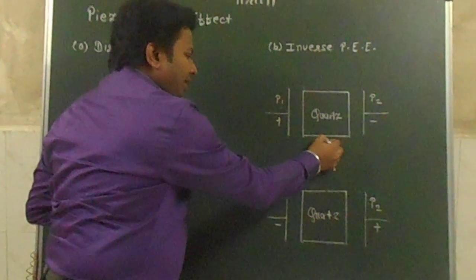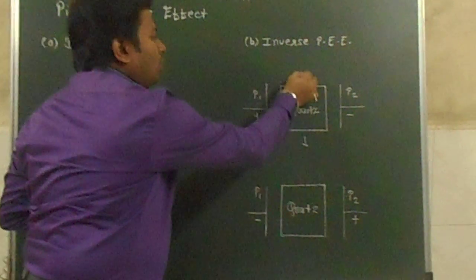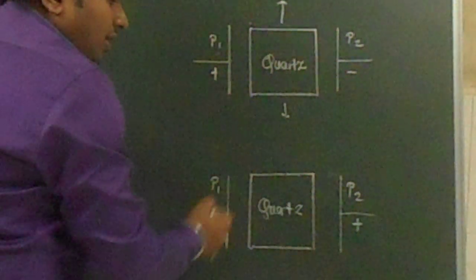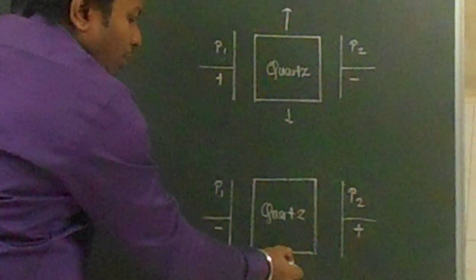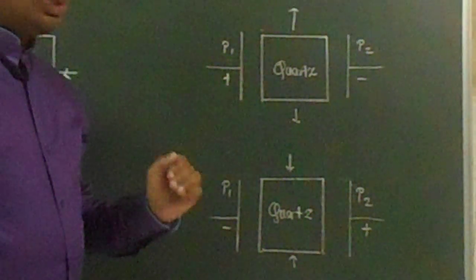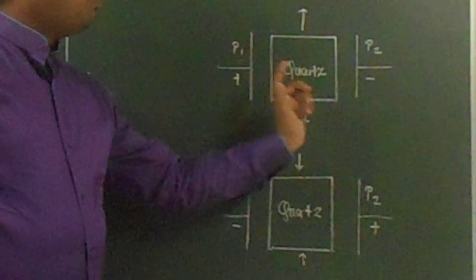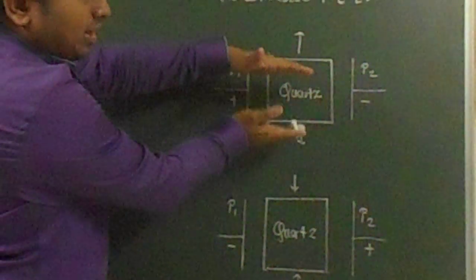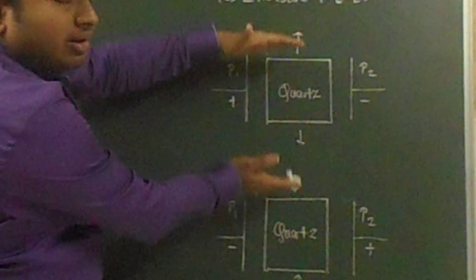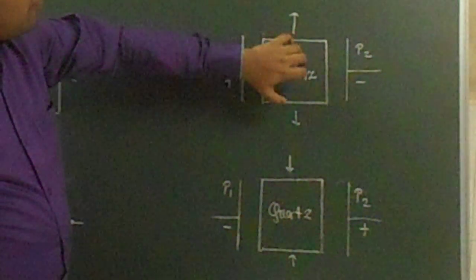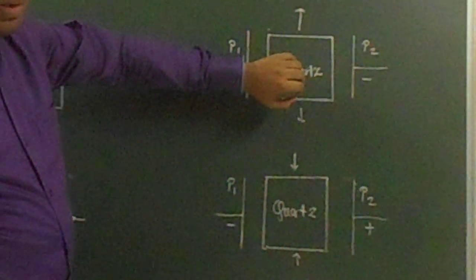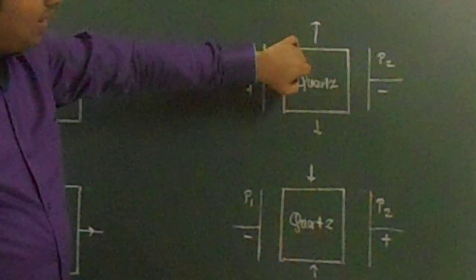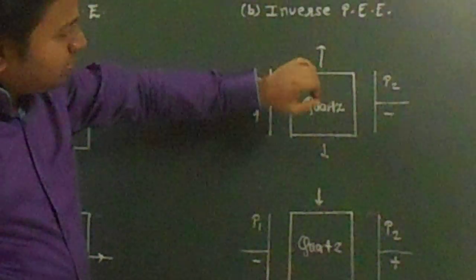In the first case, the sample gets compressed along the x-axis and elongated along the y-axis. In the second case, the sample gets expanded along the x-axis and compressed along the y-axis. If we alternately keep changing the polarities of P1 and P2, the sample will either expand or compress — expand and compress, expand and compress — so the sample is performing vertical oscillation.